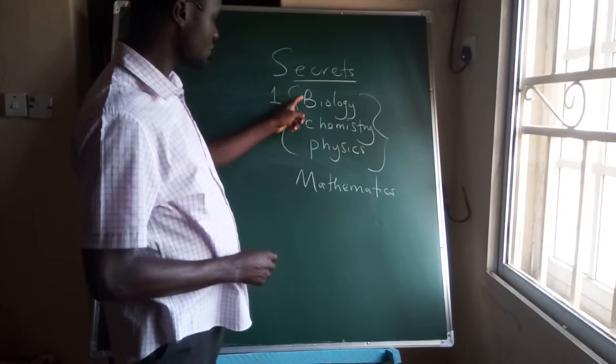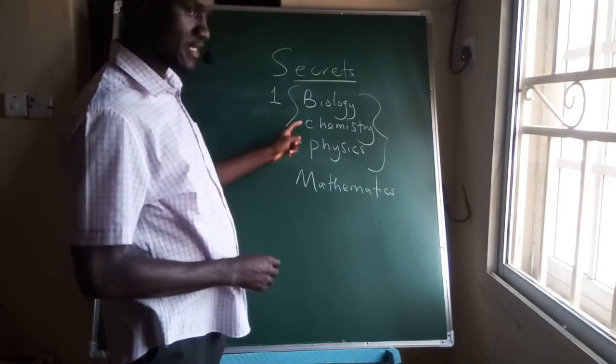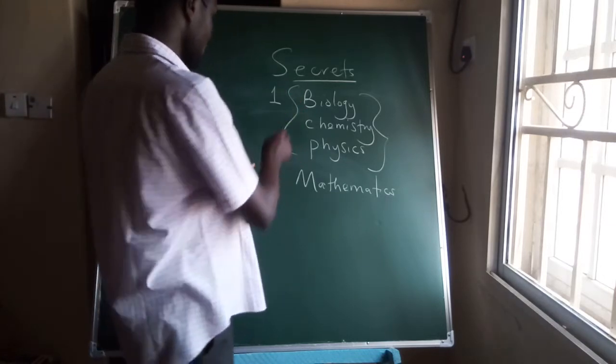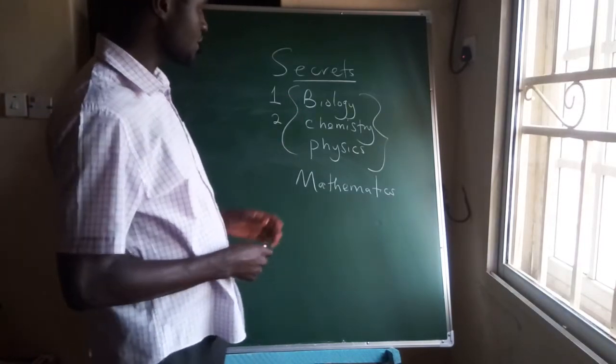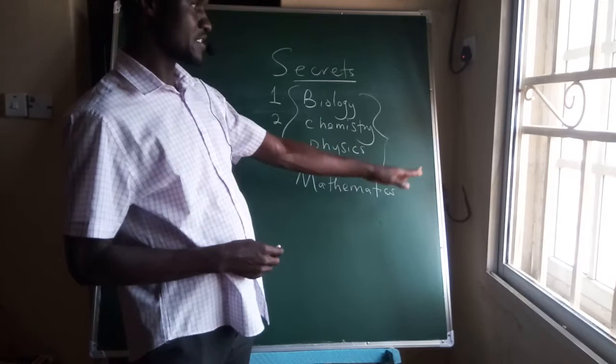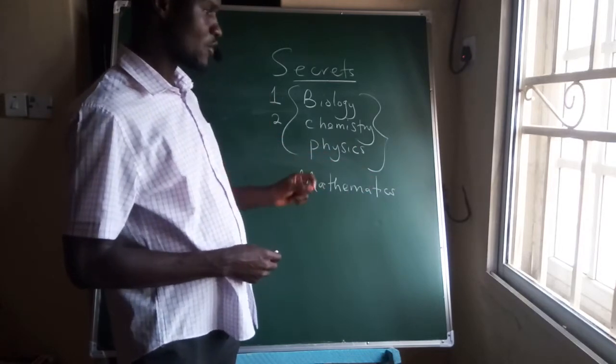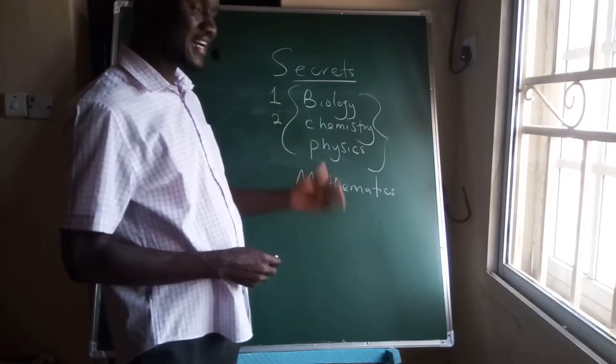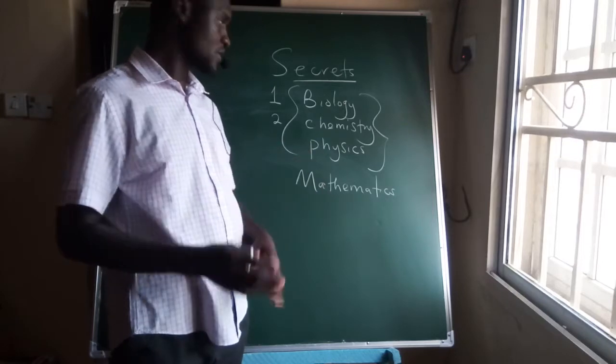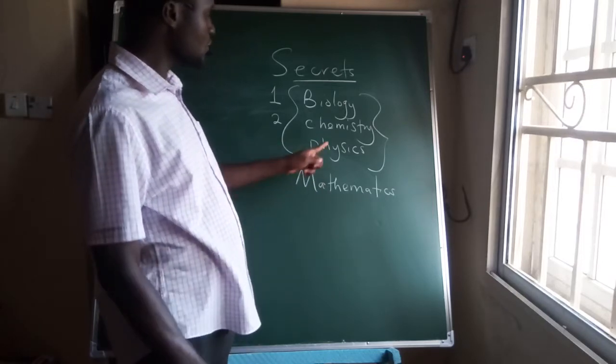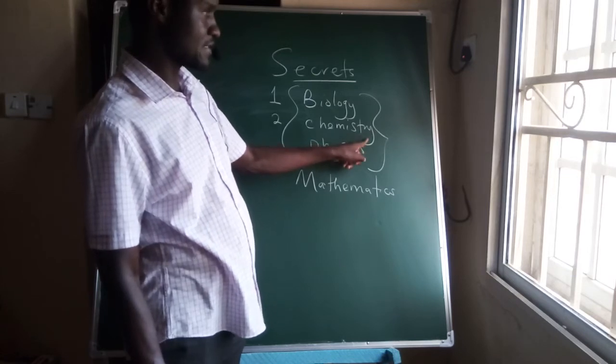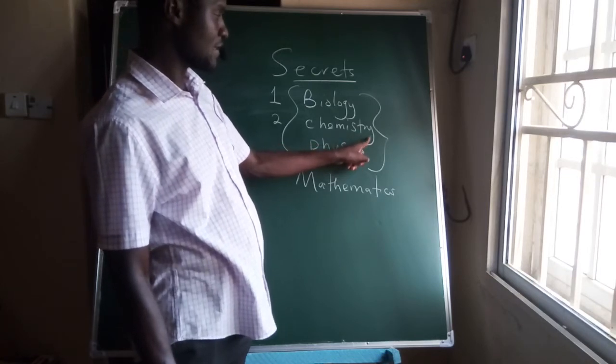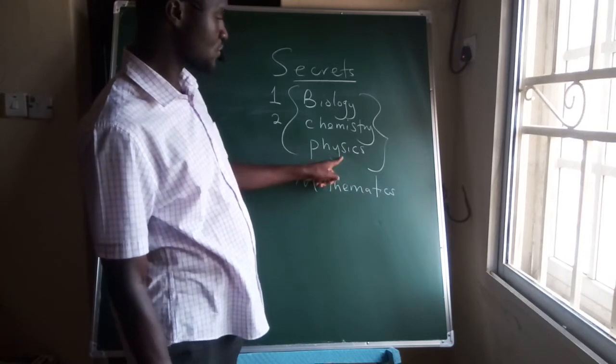Now when you finish Biology, the next subject you go to is Chemistry. And in Chemistry, at times we do have some calculations. So please you neglect all calculations and consider or concentrate on the theoretical aspects of the questions. Please just leave calculations aside. Now when you finish all the theoretical questions in Chemistry and you left the calculations, then the next subject you go to is...